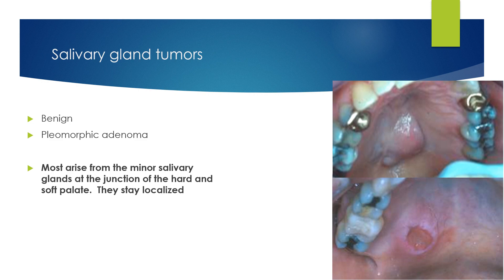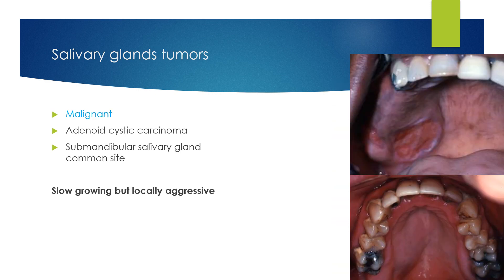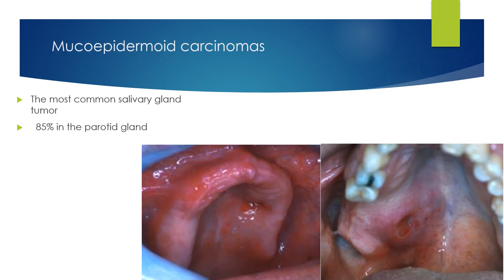Moving to salivary gland tumors — benign types, like pleomorphic adenoma, may transform to malignant ones if left untreated. Most arise from the minor salivary glands at the junction of the hard and soft palate and tend to stay localized. The adenoid cystic carcinoma is the malignant type of salivary gland tumors; the submandibular gland is the common site, and although it is slow growing, it can be locally very aggressive. Mucoepidermoid carcinomas are the most common salivary gland tumors, with 85% arising from the parotid gland.